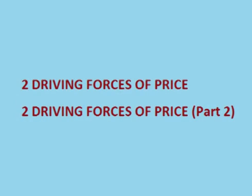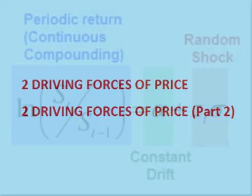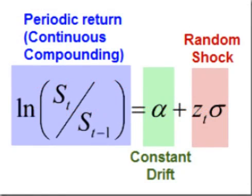For more on understanding the two driving forces of price, please watch my videos on the two driving forces of price in Brownian motion. To create a Monte Carlo simulator to model possible future outcomes, we need to find those two parts: the drift and the random stochastic component.